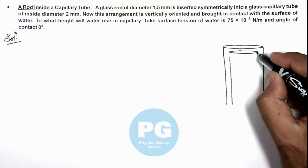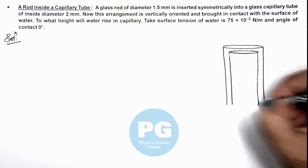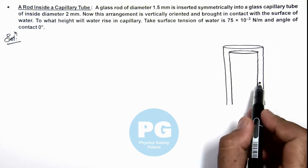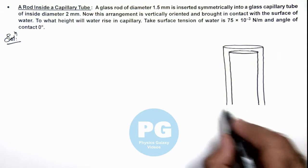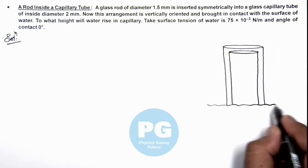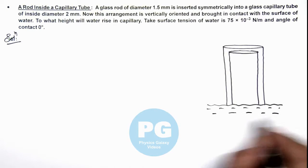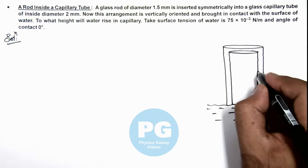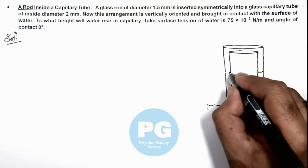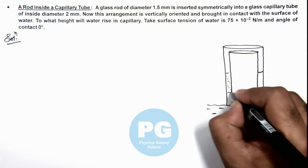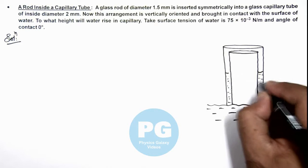So that there is an annular region left between the surface of glass rod and capillary walls. And when this is placed on the surface of water, due to surface tension water will rise in it in the annular region.